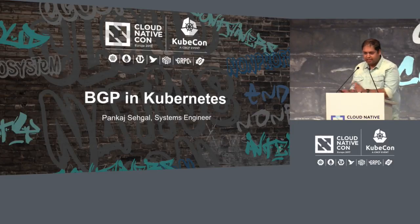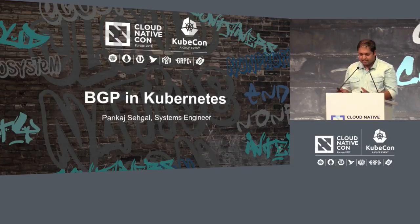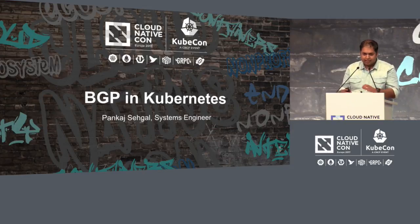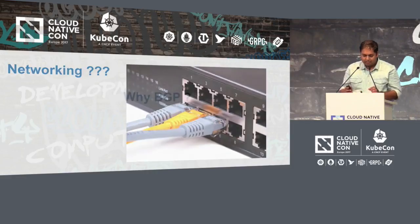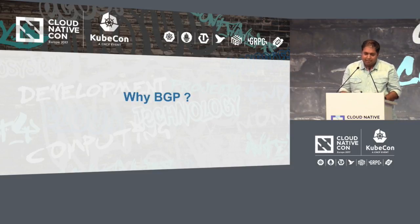Jumping into the BGP part of Kubernetes: we have been deploying containers in production, and I'm sure we are running thousands of containers. The orchestration part is almost taken care of by Kubernetes, but there is still a gray area for the networking. We don't have any standardized things for networking. There are protocols, there is everything that people have been deploying.